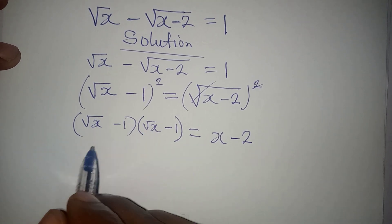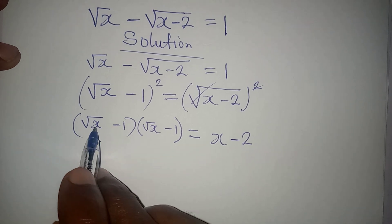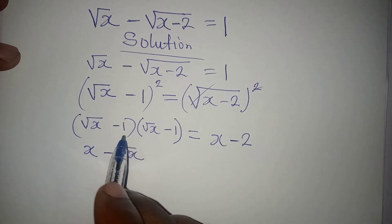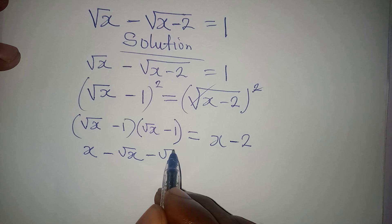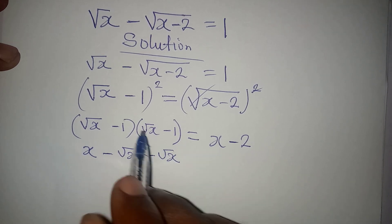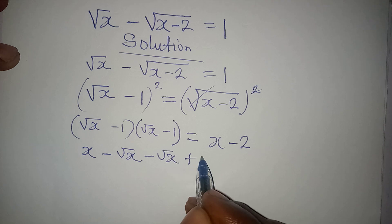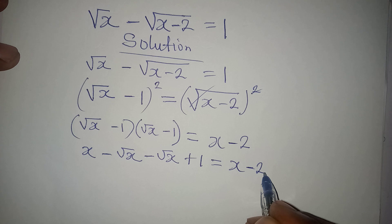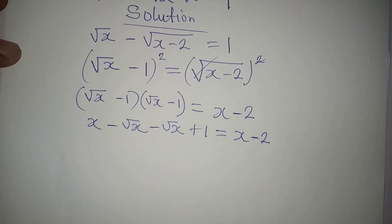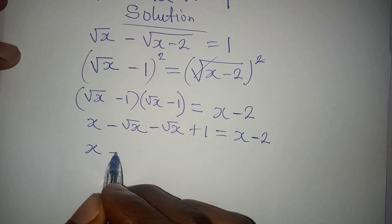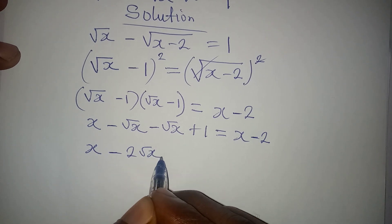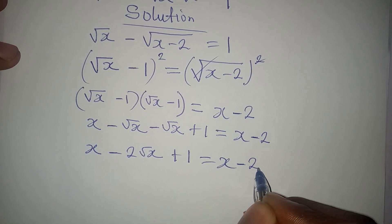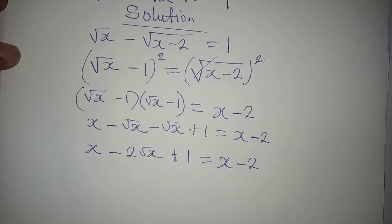Now let's open those brackets. Root x times root x gives us x. Root x times minus 1 gives minus root x. Then minus 1 times root x gives another minus root x. And minus 1 times minus 1 gives plus 1. So this is equal to x minus 2.